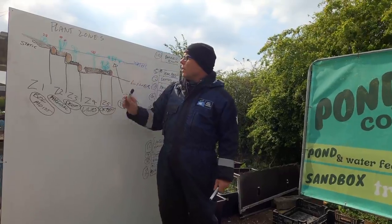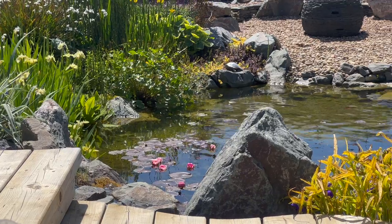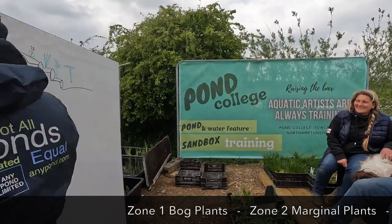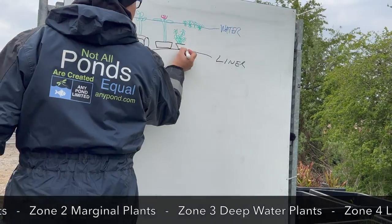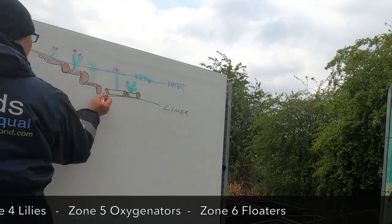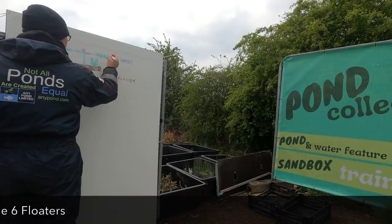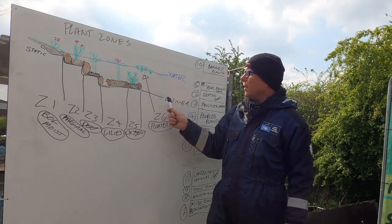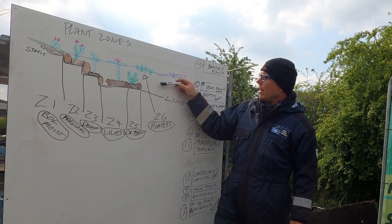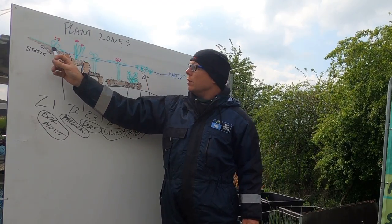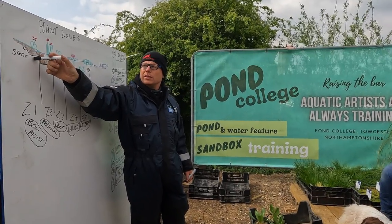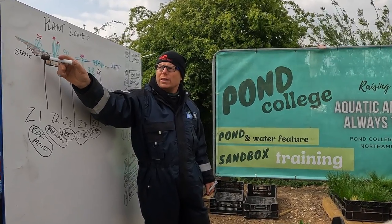Let's talk about plant zones. In a pond you've got six main zones for plants. The black line represents the liner, the blue line represents the water level. The water level fluctuates from time to time but most of the time it won't fluctuate more than a couple of inches in a week. As long as your bog plants are about two inches deep, they'll always be in contact with water.